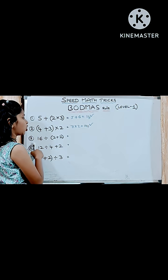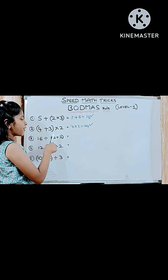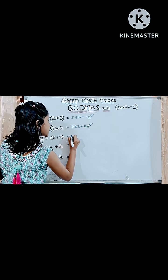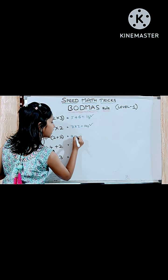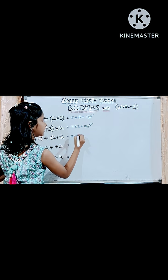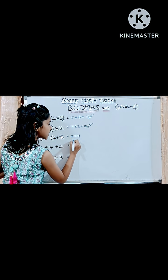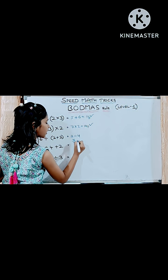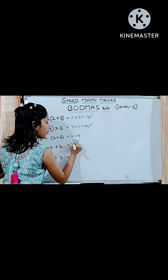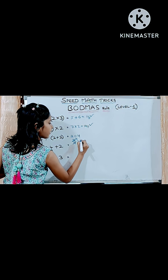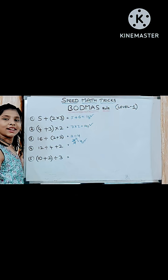In this third question also, first we should simplify bracket value. 16 divided by 2 plus 2 is 4. So, 16 divided by 4 is equal to 4. The answer is 4. That's all.